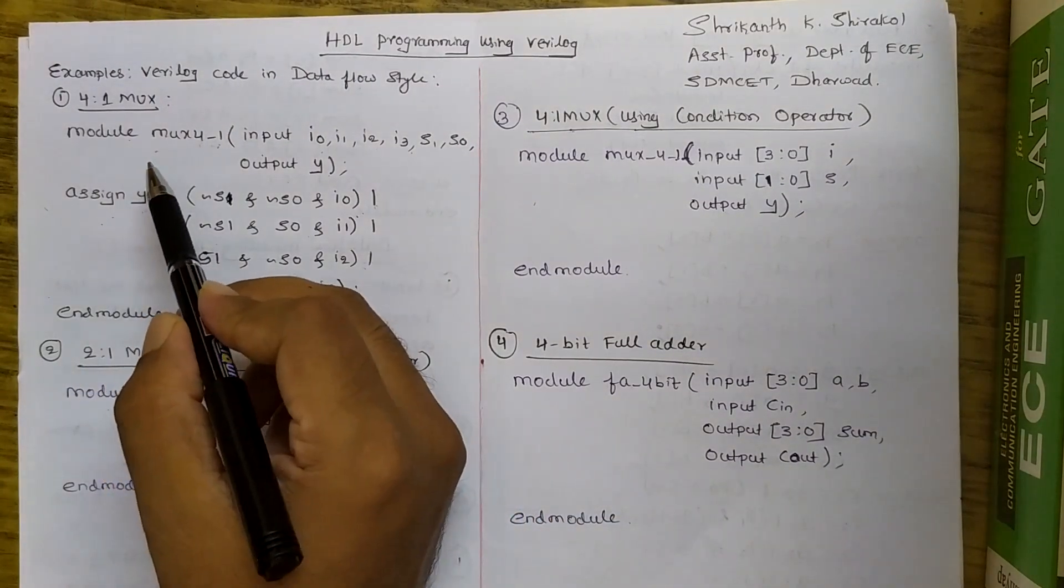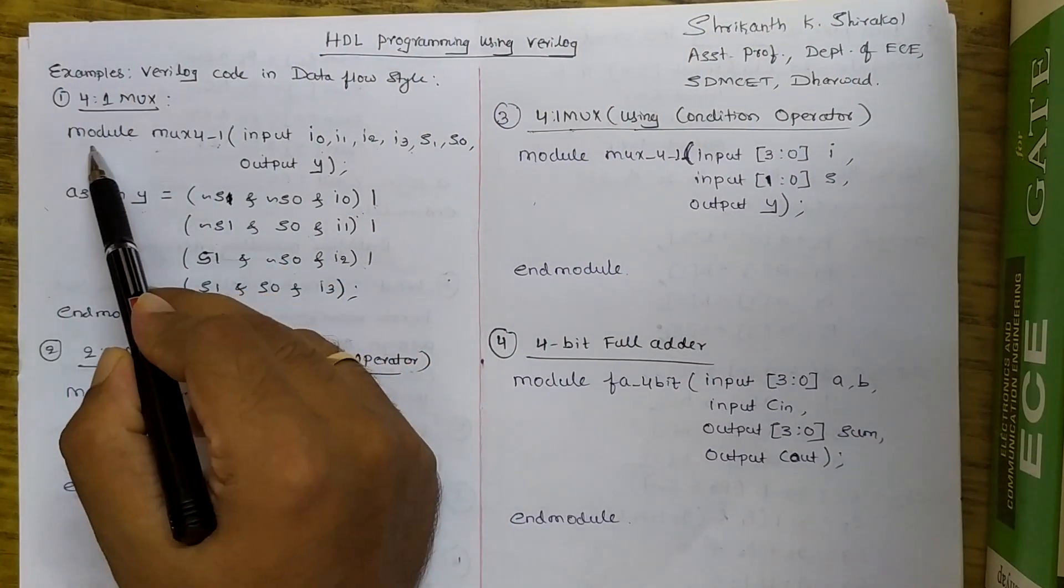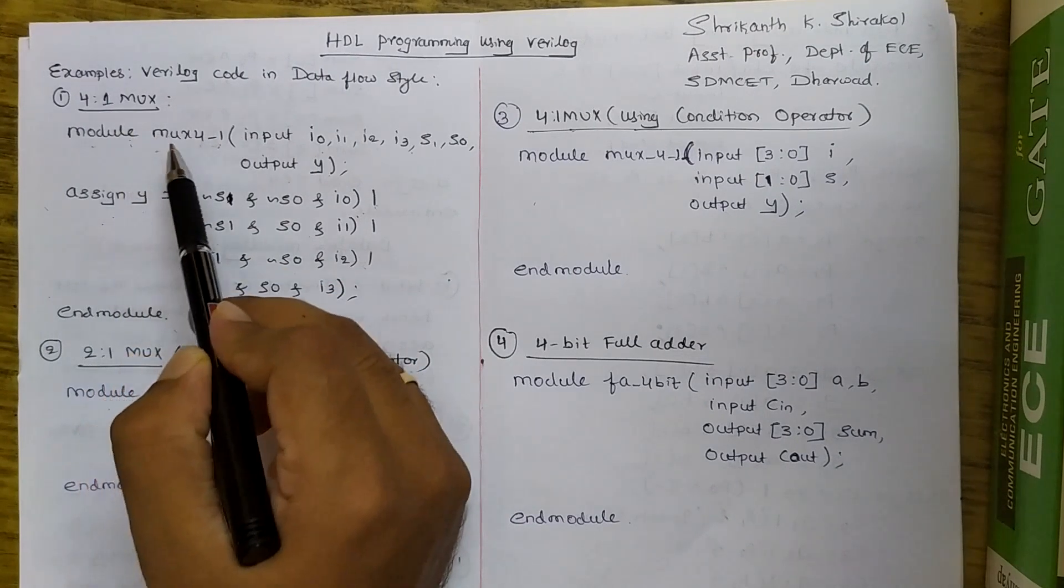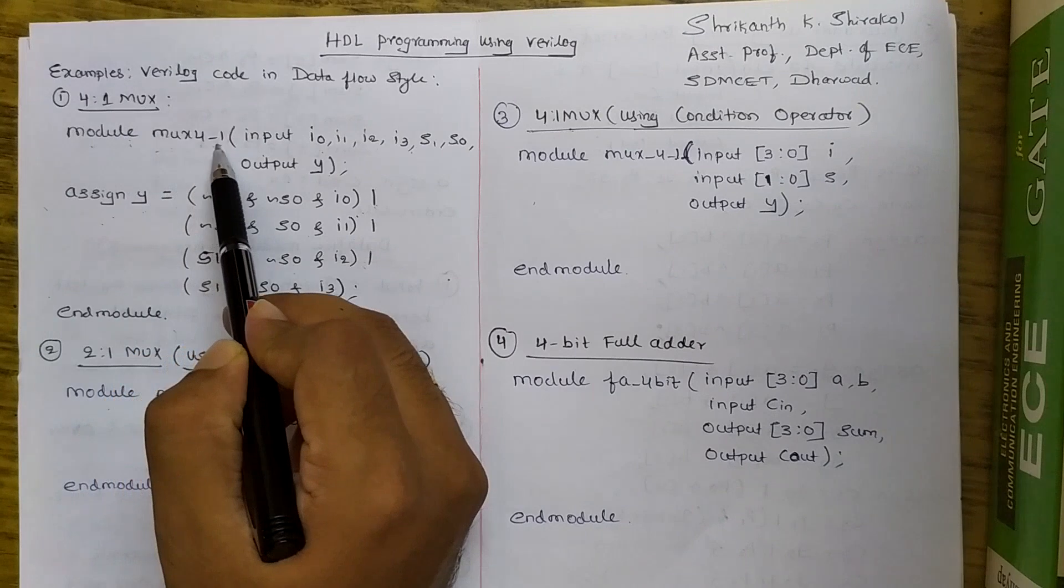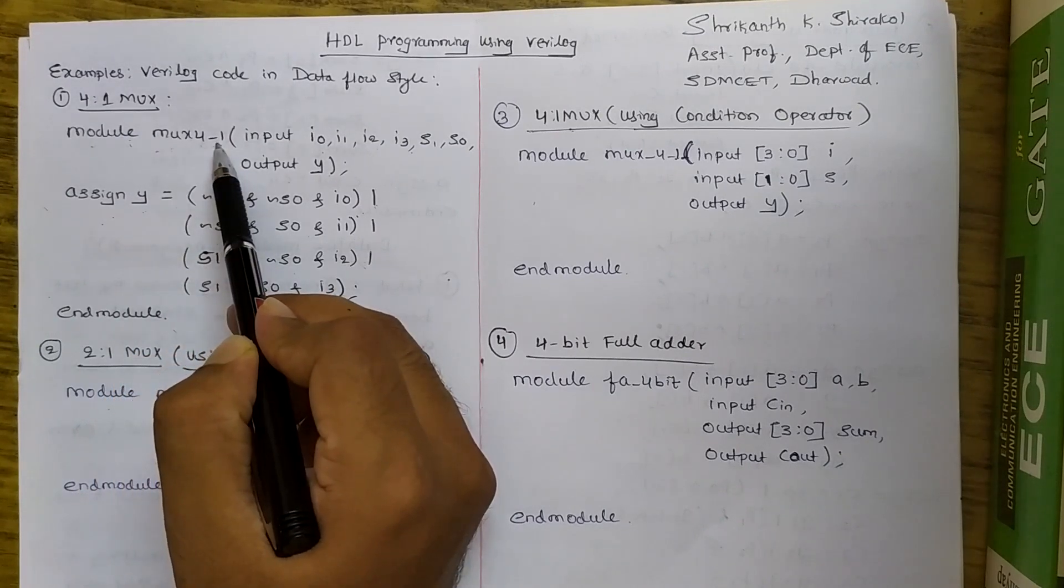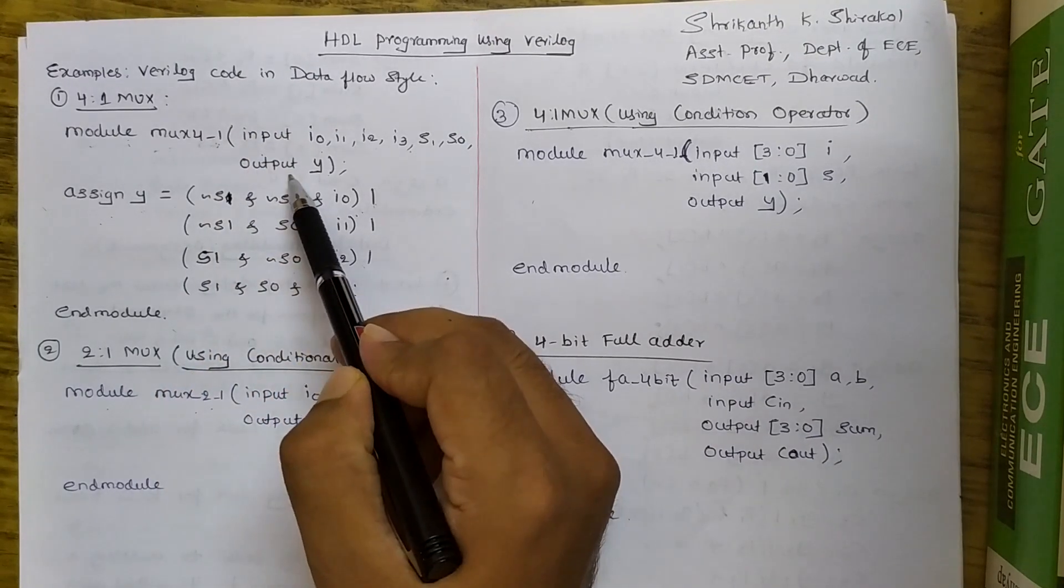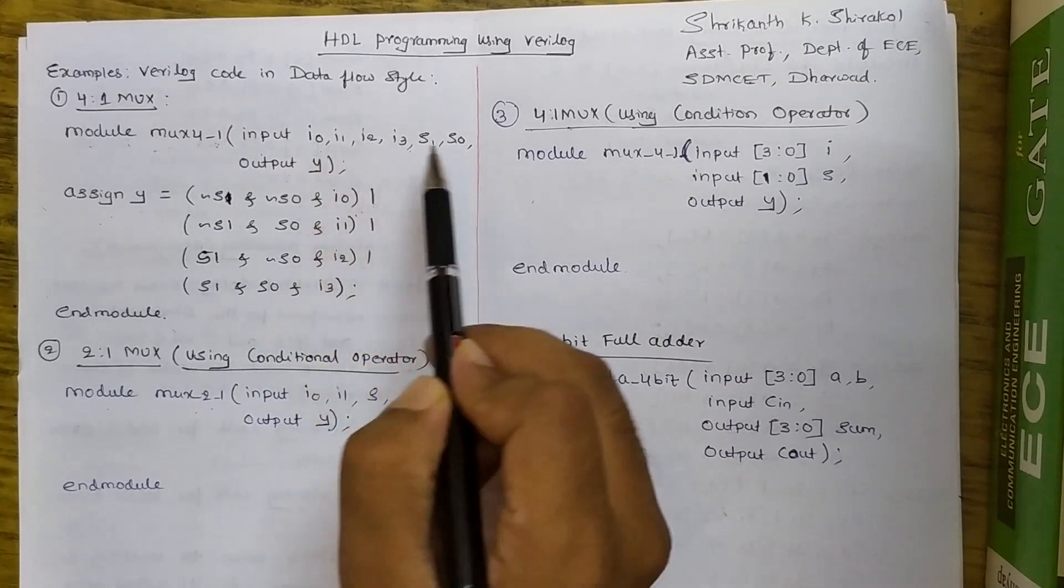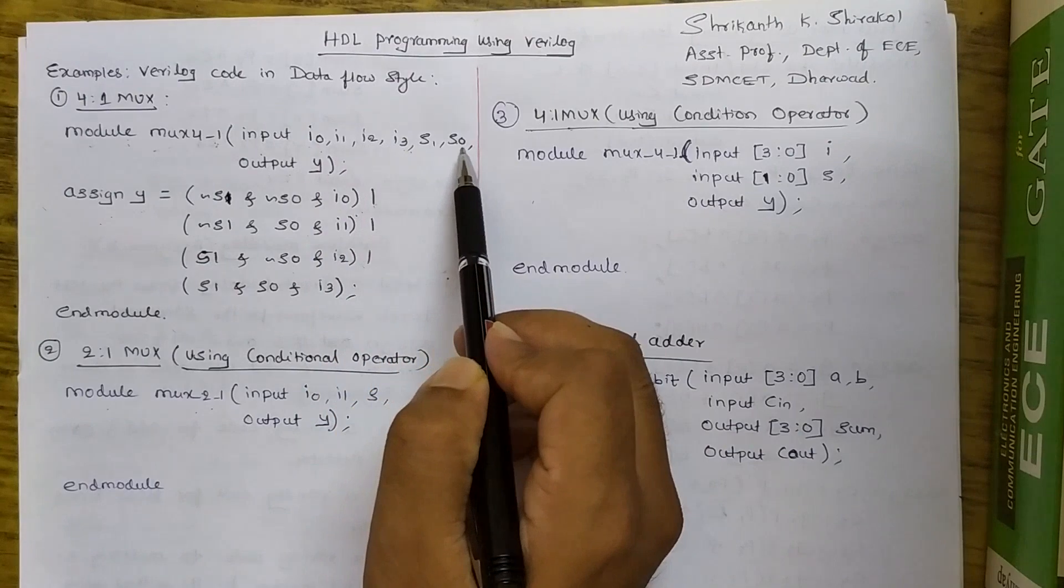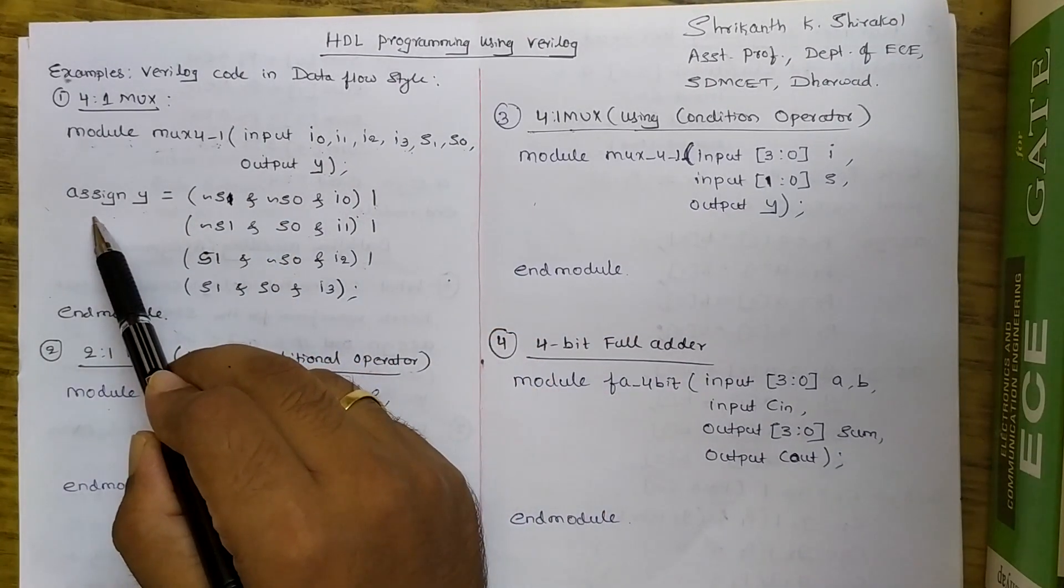So here I have some pre-written code. I've taken an example of 4-to-1 MUX. Module is a keyword. All Verilog program or code starts with this keyword. Followed by MUX4-1 is an identifier. You can write any identifier you wish, just following the rules. Followed by inputs and outputs declaration, port declaration. I have six inputs here out of which four are MUX inputs, two are select lines and one output of single bit.